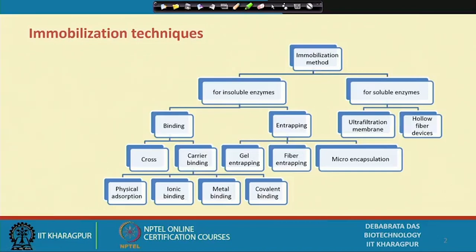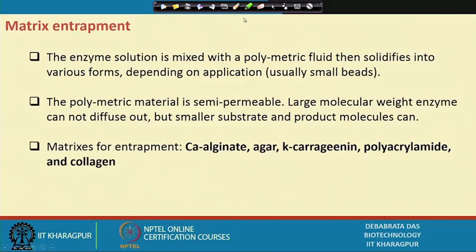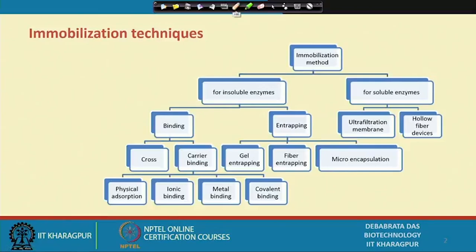In this lecture, I shall concentrate mostly on the methods and techniques of immobilization. Looking at the classification of immobilization methods, immobilization can be divided into two ways: one using insoluble enzymes, another using soluble enzymes. For insoluble enzymes, immobilization can be done by binding or by entrapping. Binding includes cross-linking and carrier binding, which is further divided into physical adsorption, ionic binding, metal binding, and covalent binding.